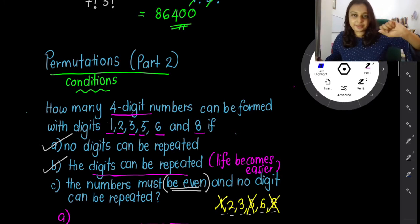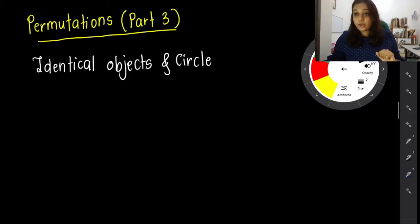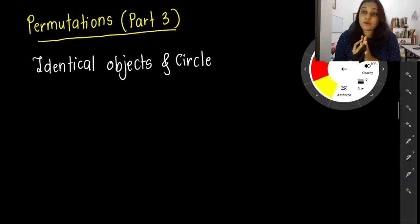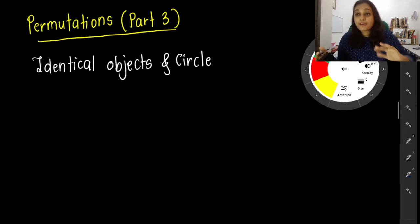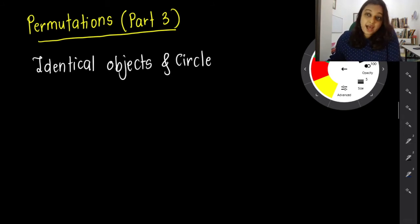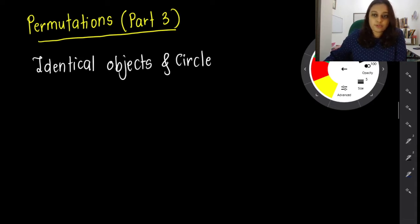Permutations for a circle - let's get started. We're going to go through two things: circle arrangements and identical objects. Permutations are all about arrangement. When you're doing arrangement for identical objects, that means you have the same thing to arrange. So how do you arrange it? There's actually a formula to remember - let's go through that first.